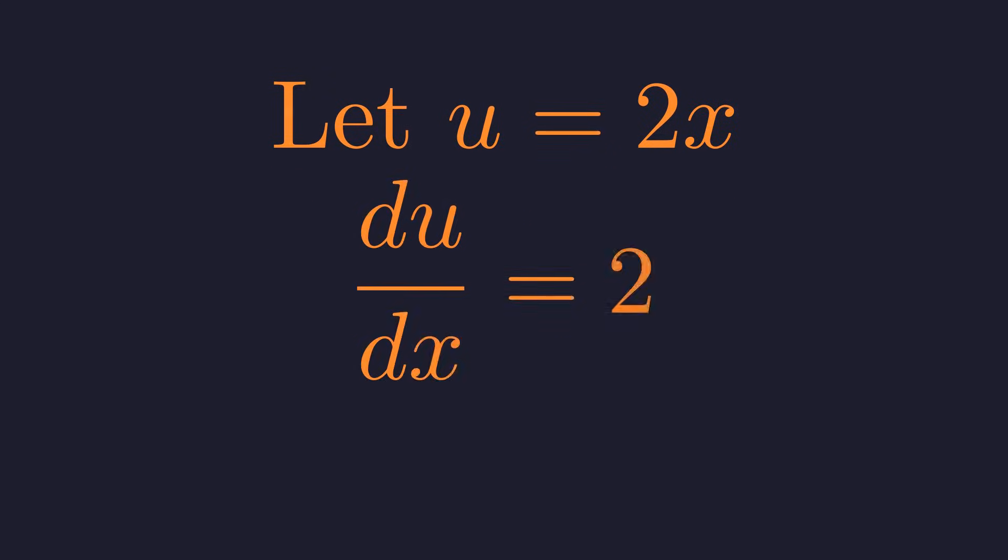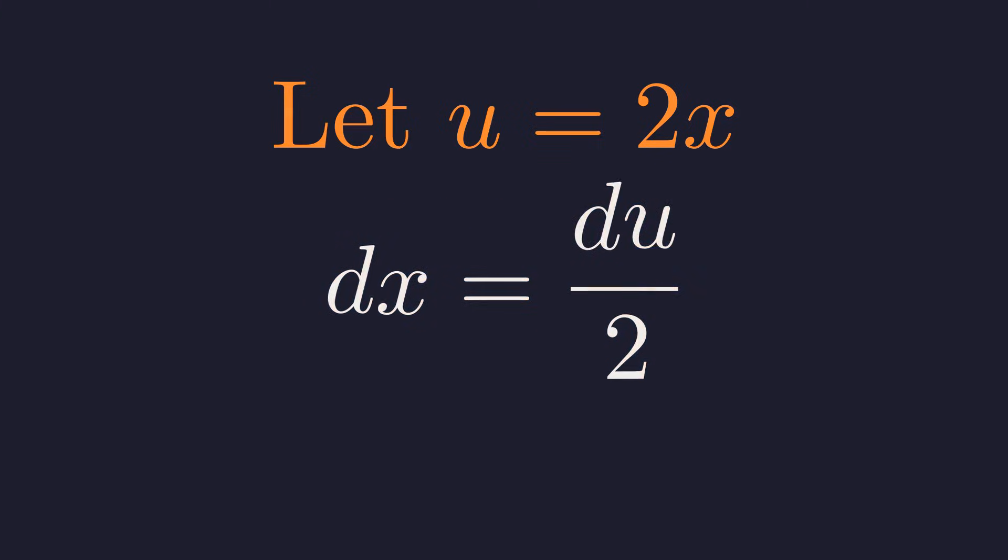Next, we differentiate u with respect to x, which gives us 2. We want to solve for dx so we can substitute it out of the integral. We treat the differentials and rearrange. Rearranging, we find that dx equals du over 2.